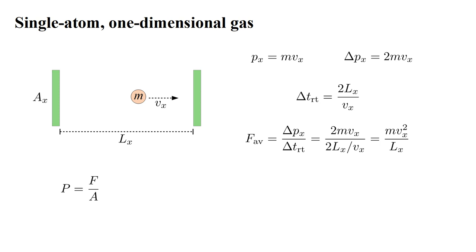Pressure is force divided by area, which is M Vx squared over Ax Lx. Ax Lx is the enclosure volume, capital V. So we end up with pressure times volume equals M Vx squared. Assuming higher temperature corresponds to faster moving atoms, the right-hand side should be related to temperature.